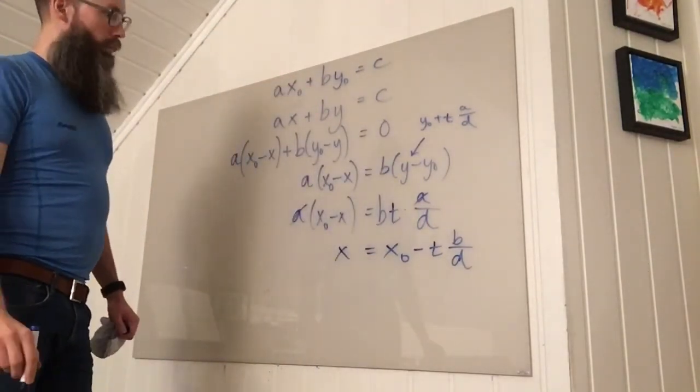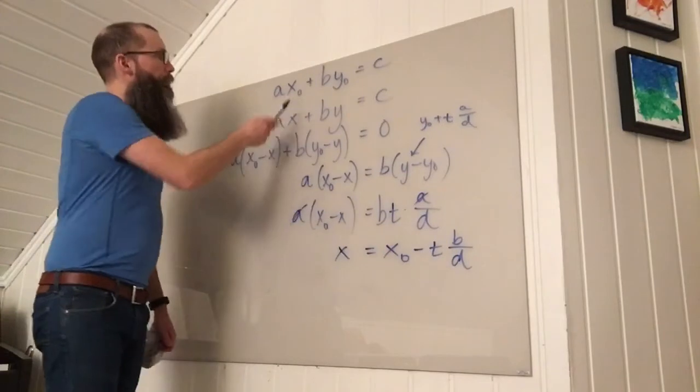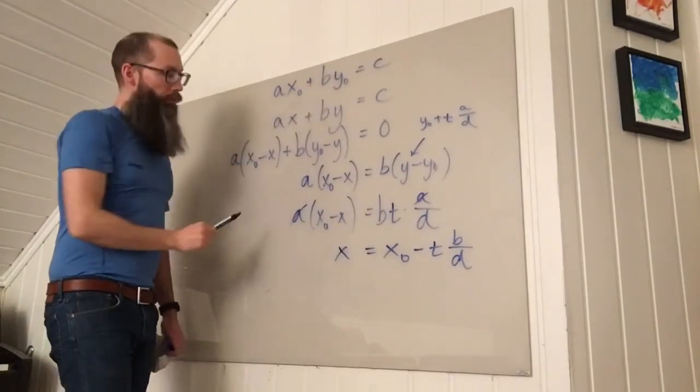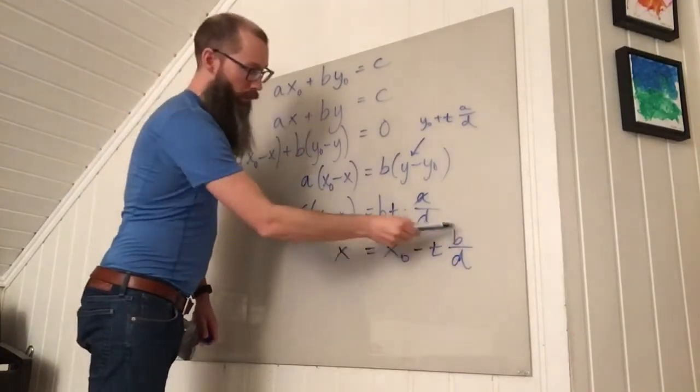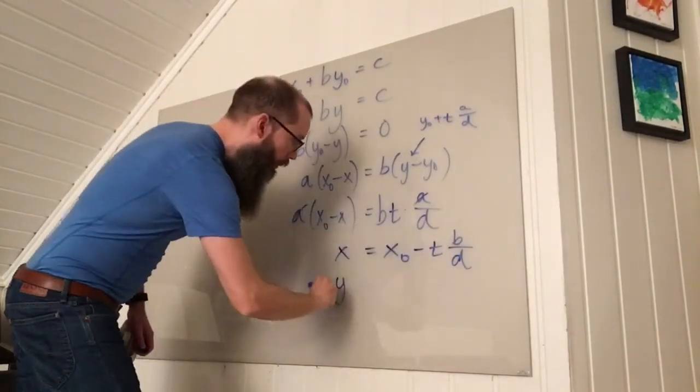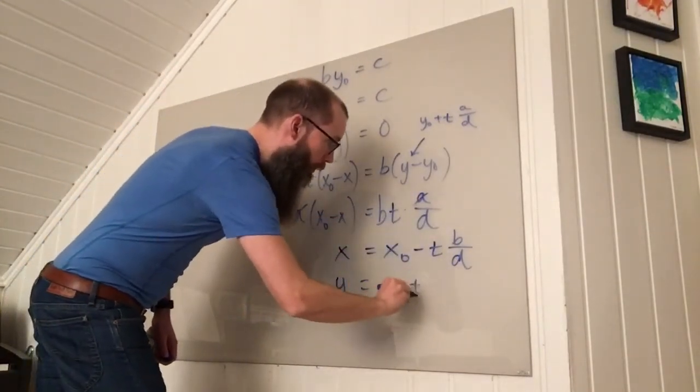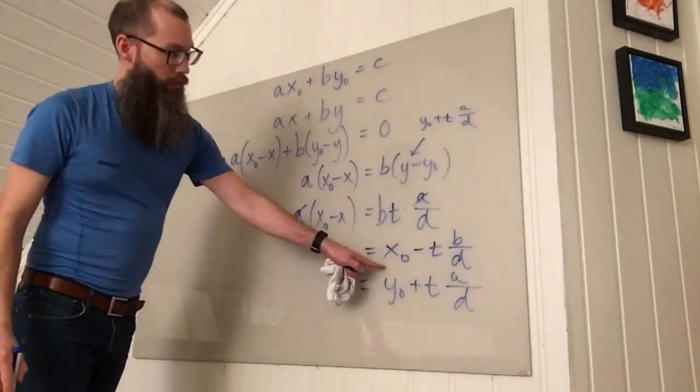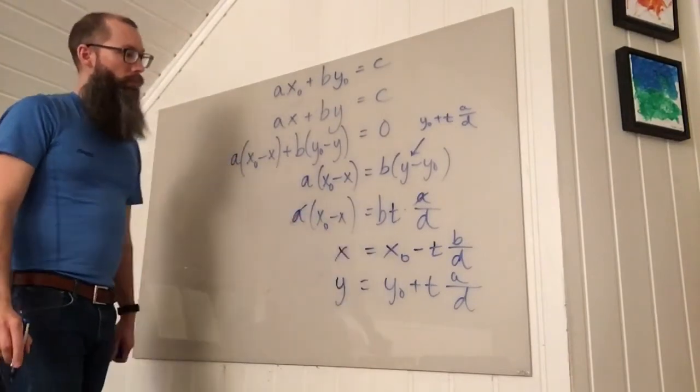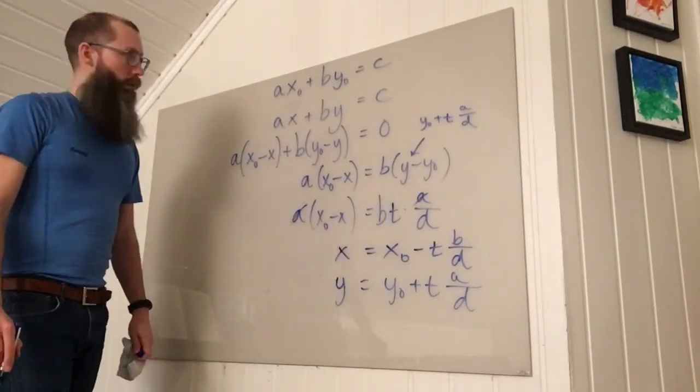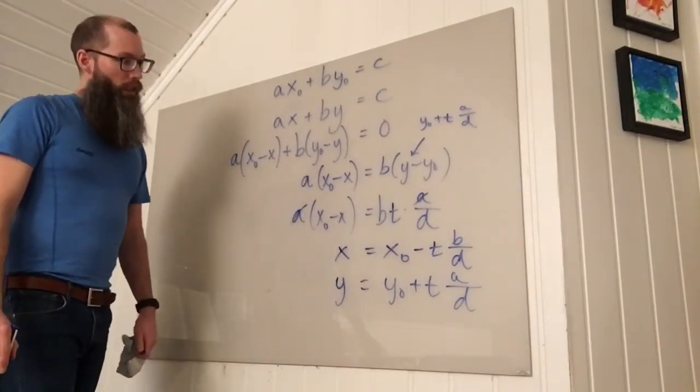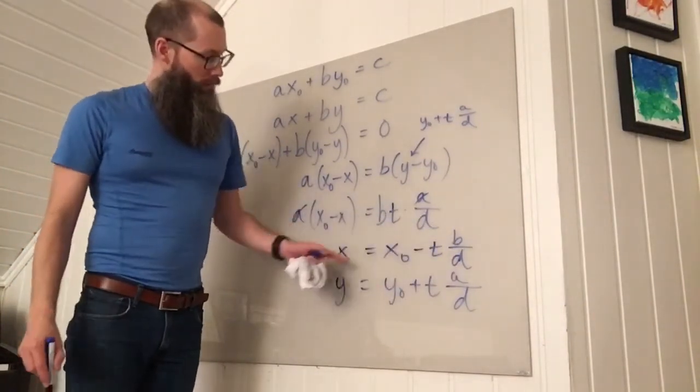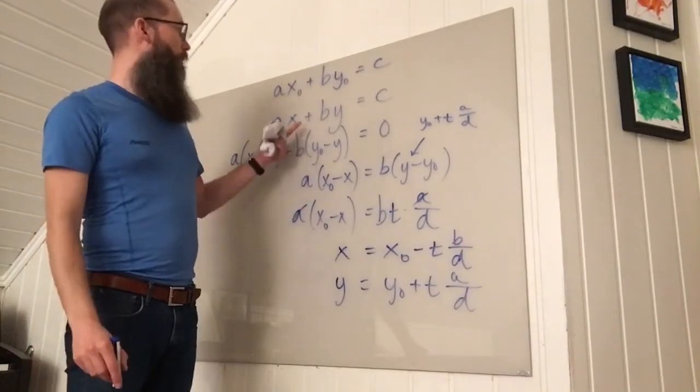So that's a consequence. If you have one solution to this problem, then every other solution has to look like this: Y equals Y0 plus T times A divided by D, and X has to be on this form. So there are no other solutions at least. However, we don't know that all of these X, Y will actually solve the equation. We only know that there are no other numbers solving the equation.